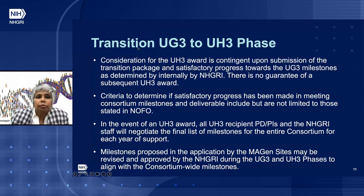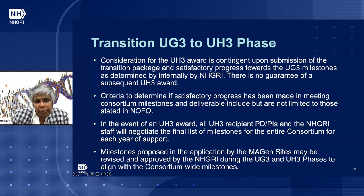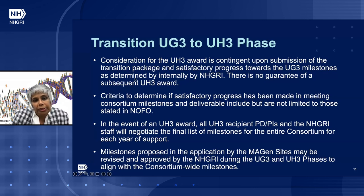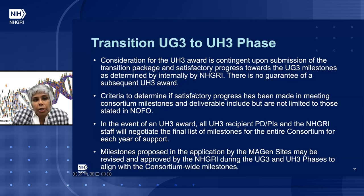Please refer to the NOFO for transition details. Consideration for transition from UG3 to UH3 is contingent upon submission of the transition package by each awardee and satisfactory progress toward UG3 milestones as determined by NHGRI. There is no guarantee of a subsequent UH3 award. In the event of a UH3 award, all recipients and NHGRI staff will negotiate the final list of milestones for the entire consortium. Milestones proposed in individual applications may be revised to align with consortium-wide milestones to meet the goals of the NOFO.